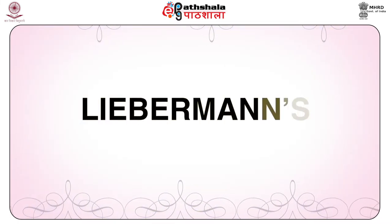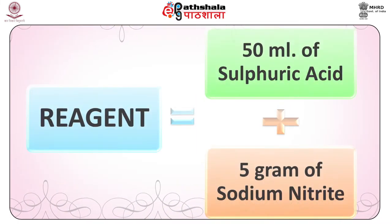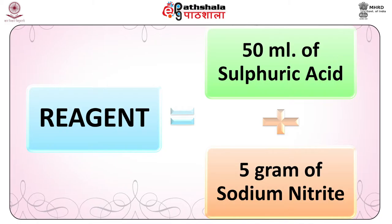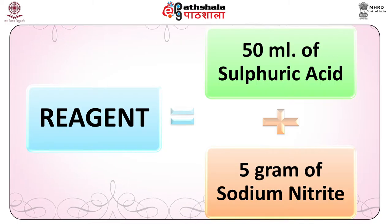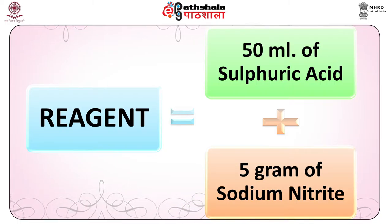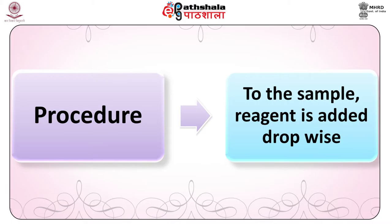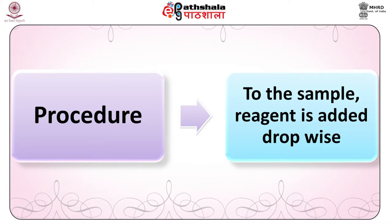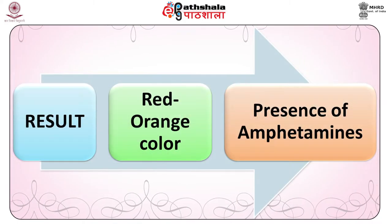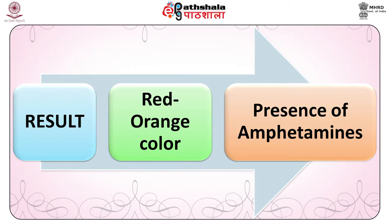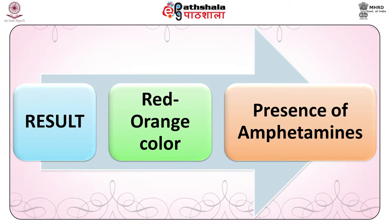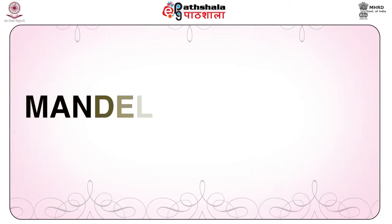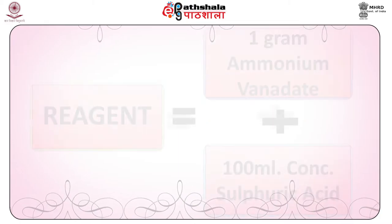Liberman's test. Preparation: 5 grams of sodium nitrite is added to 50 ml of sulfuric acid. Procedure: to the sample, reagent is added dropwise. Result: red to orange color indicates the presence of amphetamine. Next is Mandelin's reagent test. Preparation: 1 gram ammonium vanadate is dissolved in 100 ml concentrated sulfuric acid.